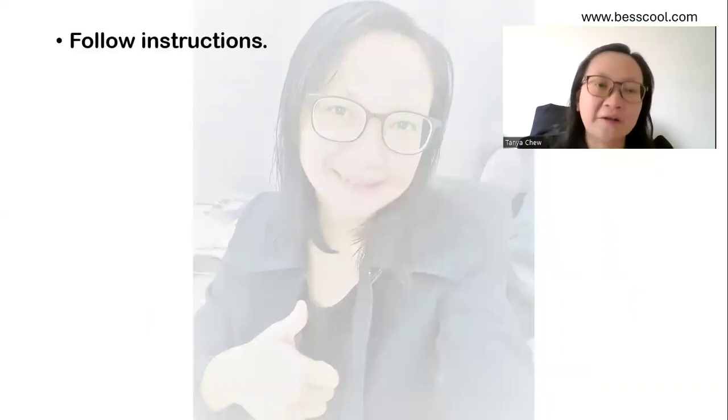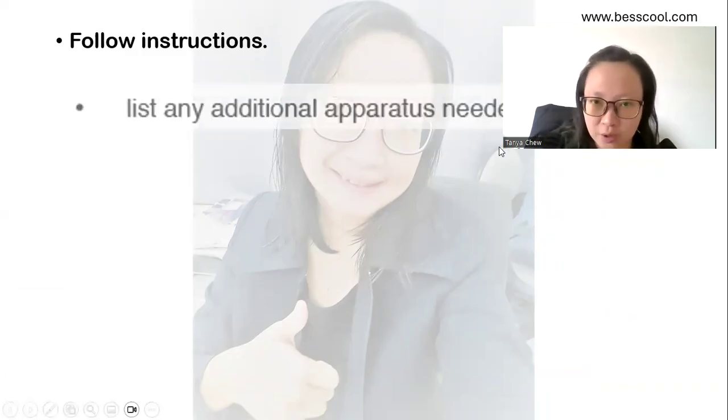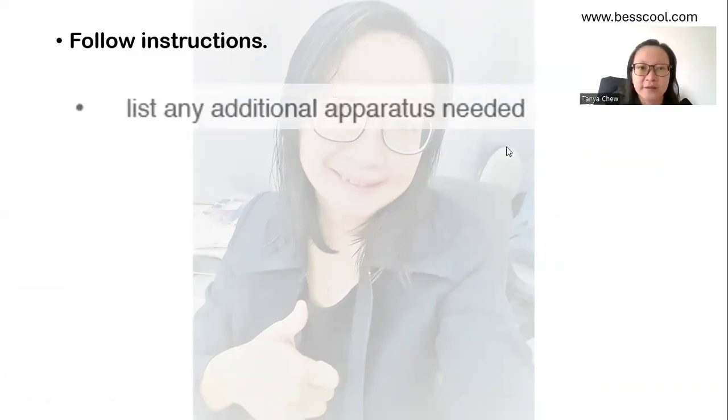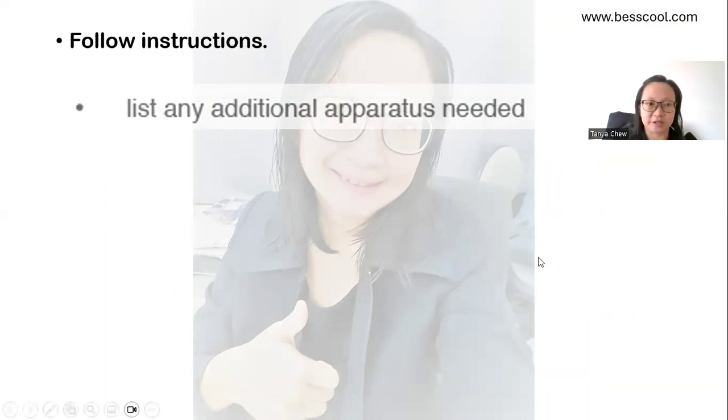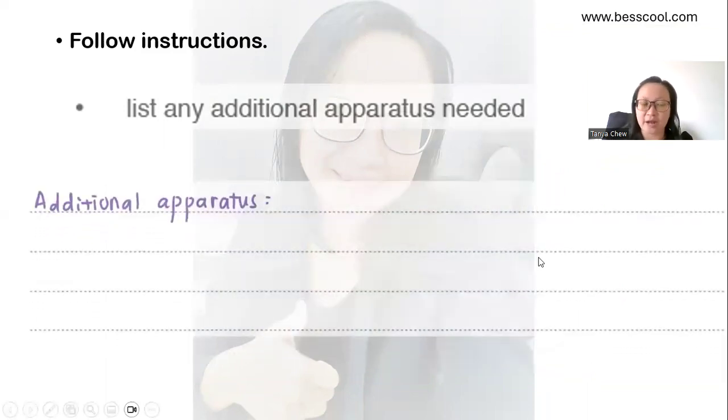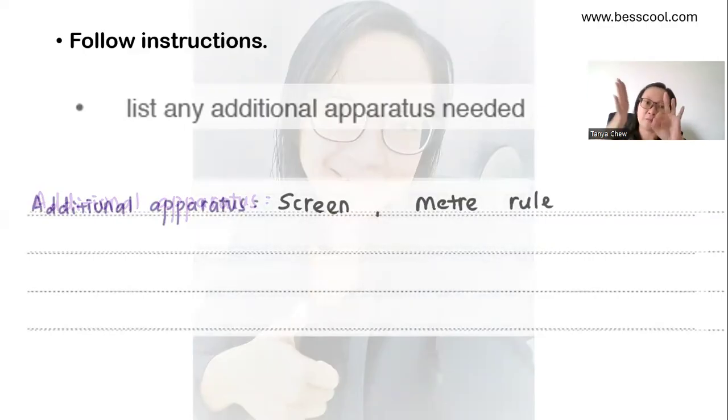And after that, you have to follow instructions. So the instructions are, the first one is that you have to list the additional apparatus needed. So all I did was I write down the additional apparatus so that it's easier for examiners to search for my answer. So I stated the screen and the meter rule. I need both of them.